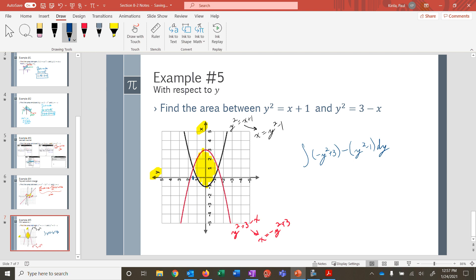But now I need to know what do the y's go between. So I do need the intersection. So the y squared minus 1 has to equal the negative y squared plus 3. So 2y squared is equal to 4. Y squared is equal to 2. So y is equal to plus or minus the square root of 2. So here's the negative square root of 2 for the y's and the positive square root of 2 for the y's. Because our integral is everything is in terms of y.